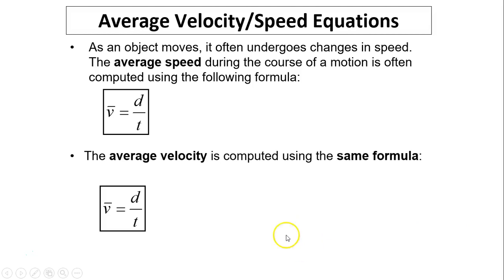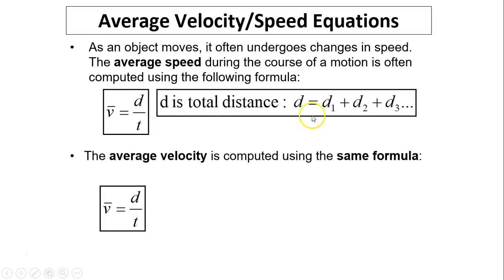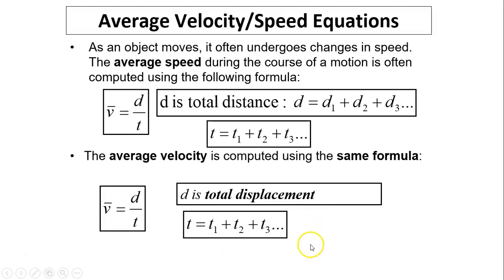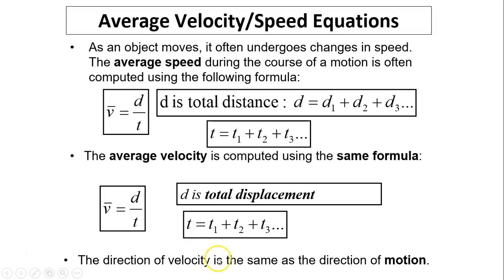Average speed during the course of motion uses the formula: D divided by T, where D represents total distance and T represents total time. Average velocity uses the same formula, but here D represents total displacement, and T is still total time. This formula is the first equation on your reference table on page six. The direction of velocity is the same as the direction of motion — if you went north, the direction is north; if going south, direction is south.